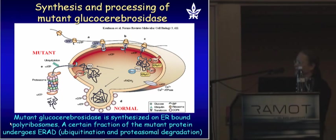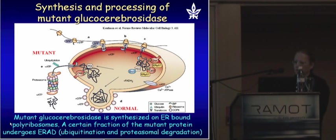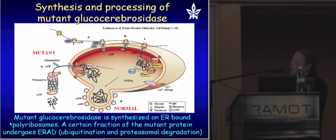What happens with the mutant enzyme? For years we thought that the same thing that happens to the normal enzyme happens also to the mutant enzyme — namely it is synthesized, enters the ER, checked, leaves the ER toward the lysosome, but arrives at the lysosome with less activity toward the substrate, so there is attenuated hydrolysis and the substrate accumulates. But in recent years we found that this is not right. What actually happens is that the mutant enzyme is recognized by the ERQC as misfolded.